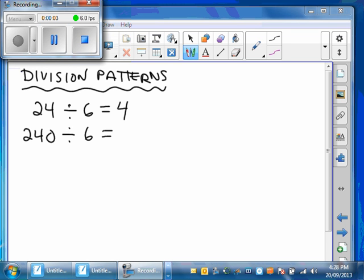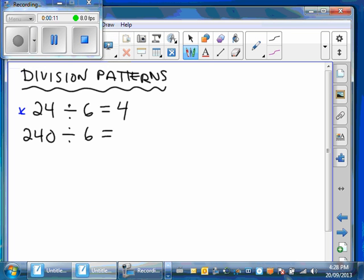We're going to take a look at some basic division patterns. We'll start with the first one: 24 divided by 6 equals 4. We know our basic division tables that 24 divided by 6 is 4.